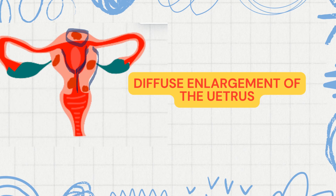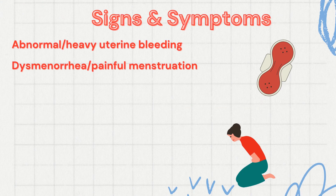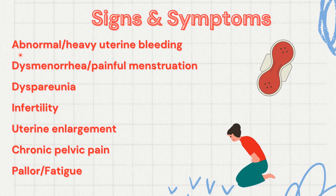This will ultimately lead to a diffuse enlargement of the uterus. The first and foremost sign is abnormal or heavy uterine bleeding. Adenomyosis is one of the important causes of abnormal uterine bleeding in women of reproductive age. Next is dysmenorrhea, or painful menstruation — a characteristic feature of adenomyosis, because endometrial tissues embedded in the myometrium lead to painful contraction of the muscles during menstruation.